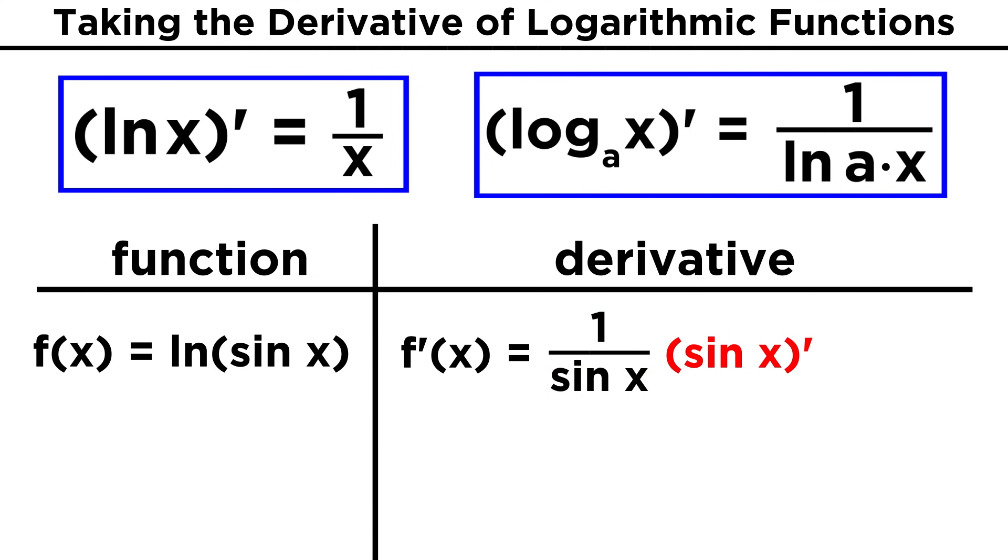Then we multiply by the derivative of what was inside, and the derivative of sine X is cosine X. So we end up with cosine X over sine X, which is equal to cotangent X.